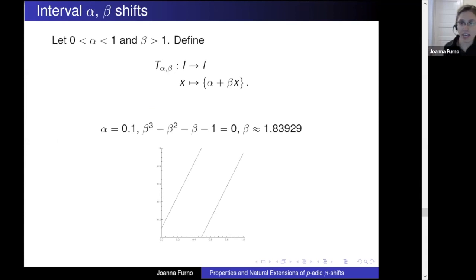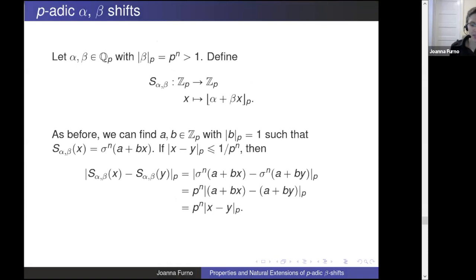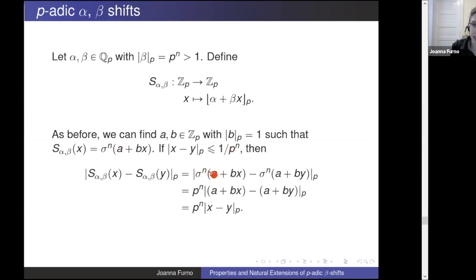What other maps can we look at? Alpha-beta shifts on the interval: you take beta*x, add an alpha before taking the fractional part, which creates a gap on the left and a gap on the right, making things more complicated. For p-adic alpha-beta shifts, you can similarly break down the transformation: find A and B in your p-adic integers where B has absolute value one, so the transformation is just a linear map composed with a shift.